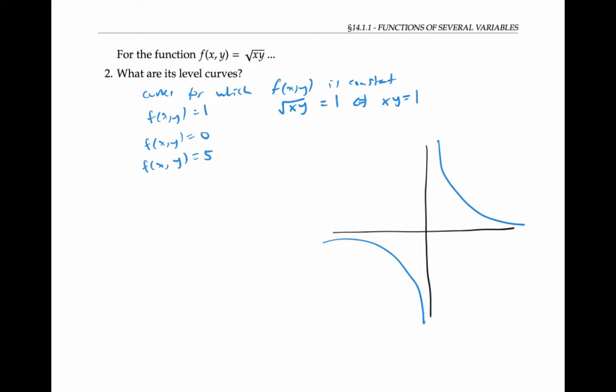The second level curve is where the square root of xy equals zero, that corresponds to xy equals zero, which is where x equals zero or y equals zero. x equals zero is the y-axis, and y equals zero is the x-axis. So this level curve consists of two intersecting lines.